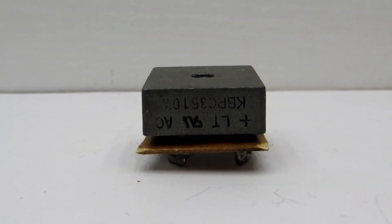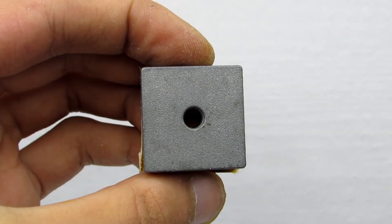Rectifier diode current must be at least 15 to 20 amperes. I used ready bridge for 30 amperes.